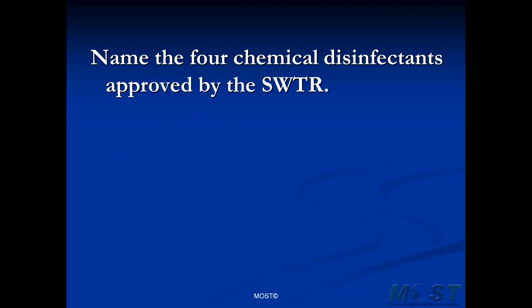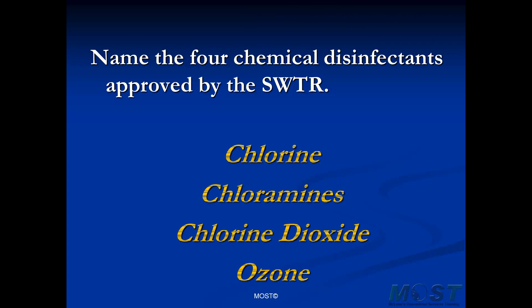Name the four chemical disinfectants approved by the surface water treatment rule. To accomplish our second barrier, we can use any one or any combination of these four chemicals: chlorine, chloramines, chlorine dioxide, and ozone.